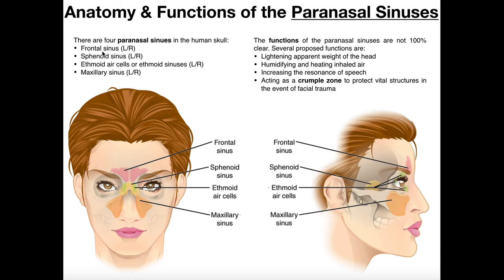The first set of sinuses is the frontal sinuses. They are the most superior of all of these and they pretty much just lie within the frontal bone, and they're the closest to the forehead.